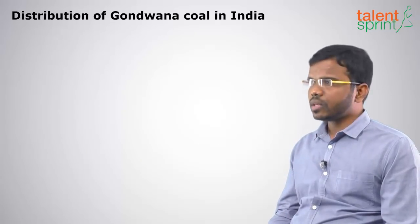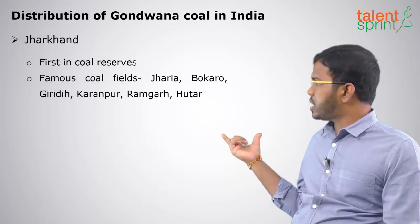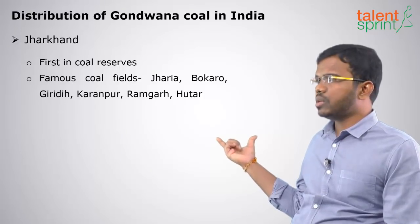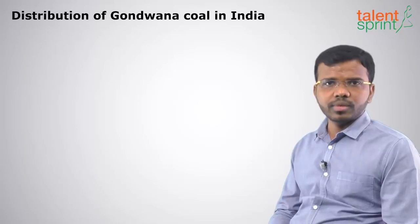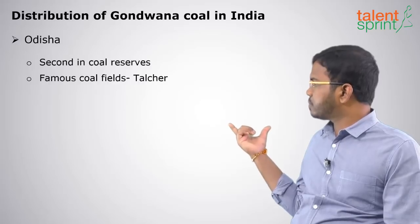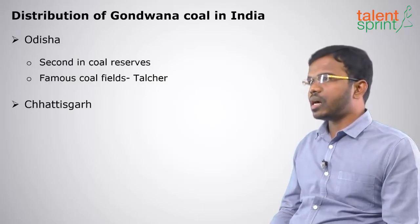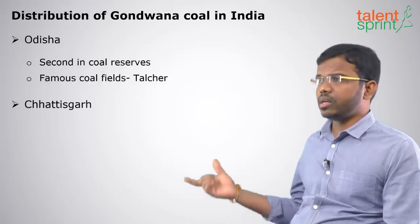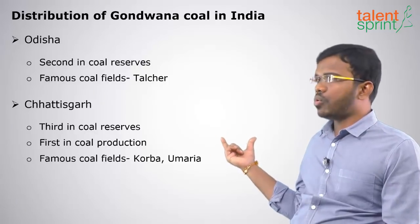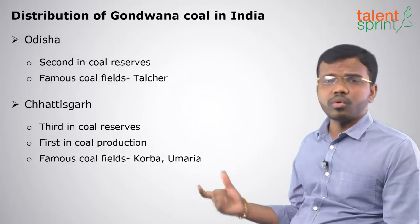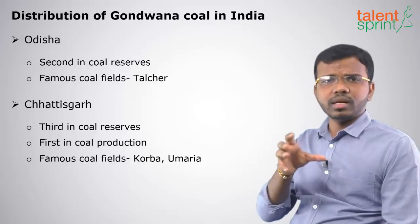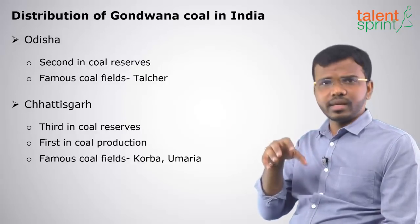Gondwana coal makes up 98 percent of total reserves and 99 percent of total coal production in India. Jharkhand has the highest coal reserves in India — famous coal fields are Jharia, Bokaro, Giridih, Karanpur, Ramgarh, and Utar. Odisha has the second highest coal reserves, with famous fields at Talcher. Chhattisgarh has the third highest reserves and is first in coal production — famous coal fields are Korba and Umaria. Rankings between states may vary, so focus on knowing the mine locations.